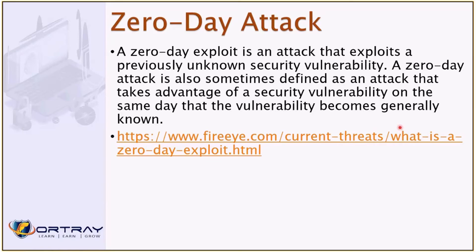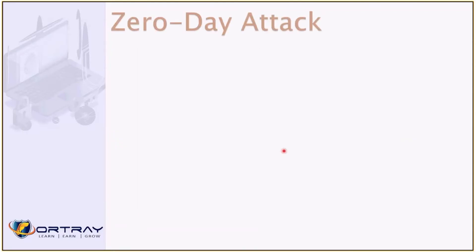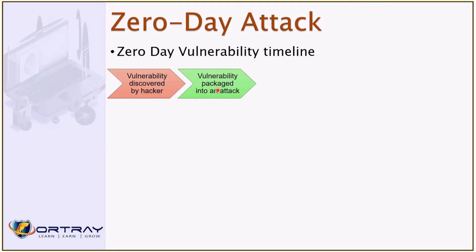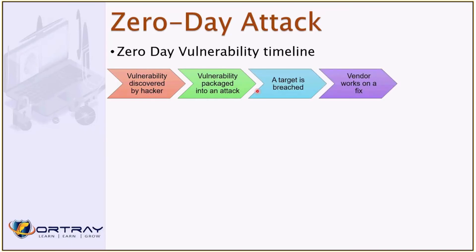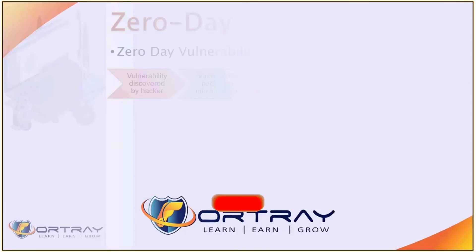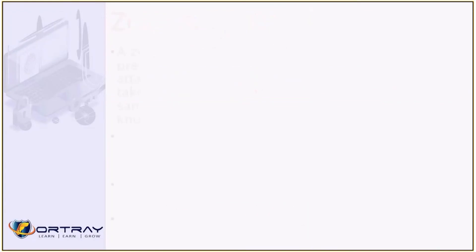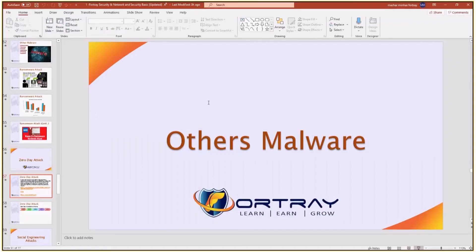I'll give you a video as well so you can see the zero-day vulnerability timeline. What happens is: vulnerability discovered by the attacker, vulnerability packaged into an attack, target is breached, vendor works on a fix, and then vendor releases a fix. That's the basic idea of the zero-day timeline.